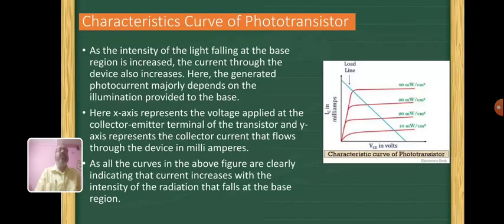The characteristic curve of the phototransistor shows that as the intensity of the light falling at the base region is increased, the current through the device also increases. The generated photocurrent majorly depends on the illumination provided on the base.